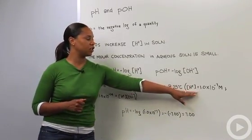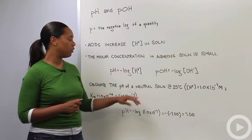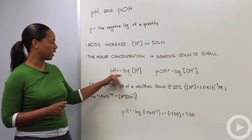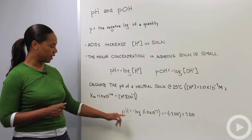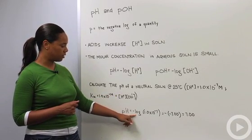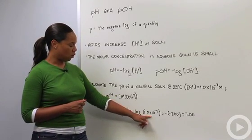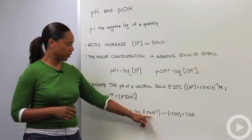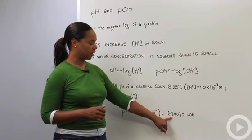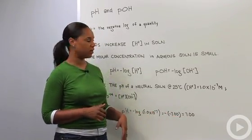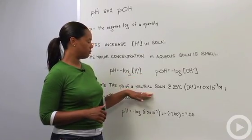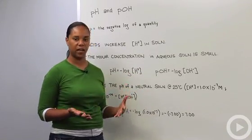So knowing that this is the concentration of protons in solution for a neutral solution, we can plug it into our equation and get the pH is equal to the minus log of 1 times 10 to the minus 7th, which means we have negative of a negative 7, which gives us a positive 7. So pH of a neutral solution is pH 7.